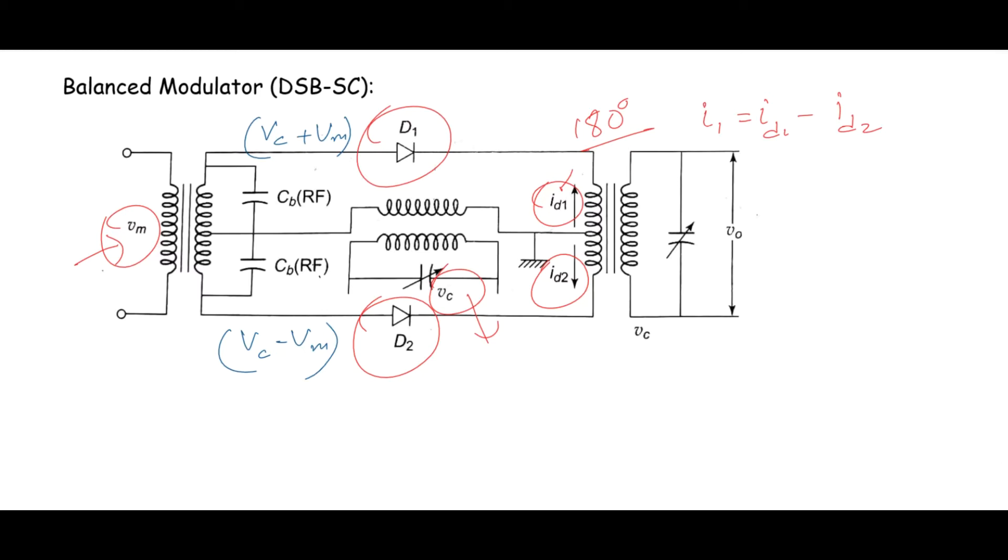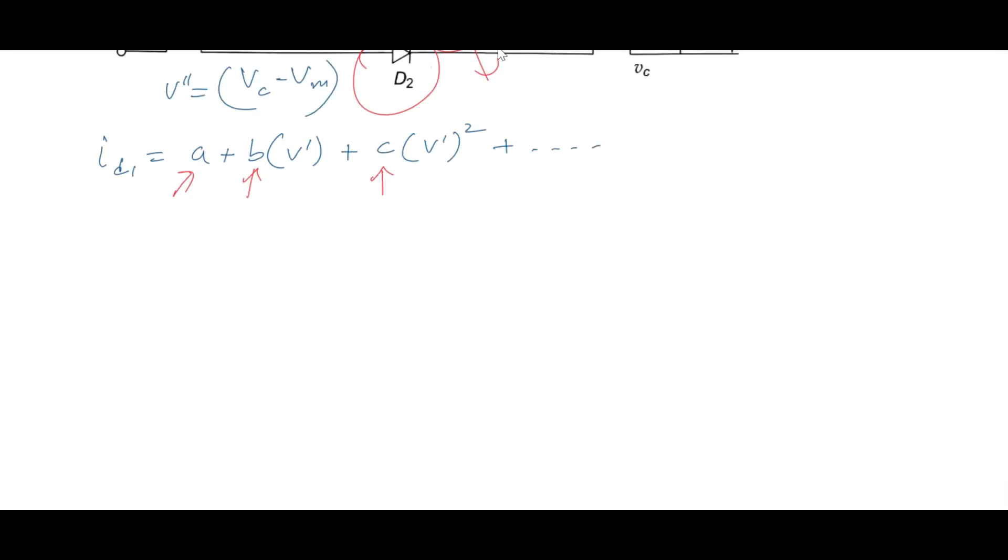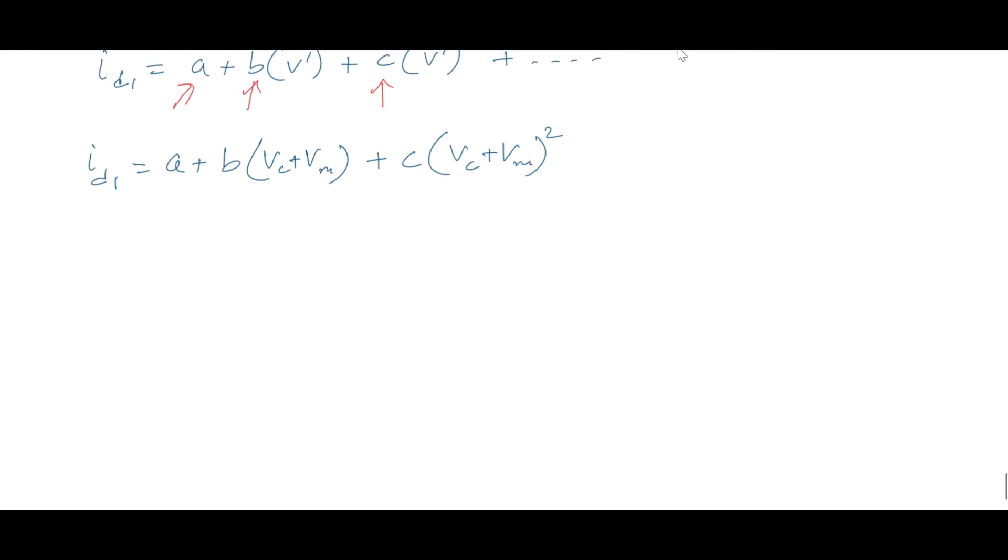Now from our previous discussions we know that current through a square law device can be represented as ID1 equals A plus B into V′ plus C times V′ squared plus higher powers, where A is the DC component, B is the conductance, and C is the non-linearity coefficient. Let us substitute the value of V′. So ID1 will become equal to A plus B(VC + VM) plus C(VC + VM)². We will consider up to square term only. Rest higher powers we'll neglect. Let us mark this equation as equation number 1.